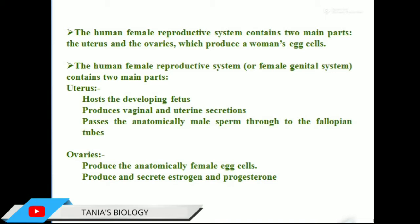If you recall when we discussed the male reproductive system, the male primary sex organ — the testis — produces sperm and requires two degrees lower temperature, which is why it is present below the abdominal cavity. But in the case of the ovary, no such requirement exists, so it is present in the lower abdominal region, that is the pelvic region. That is the difference in position of the primary sex organ — ovary in females, testis in males.